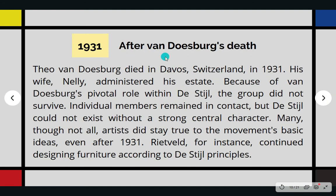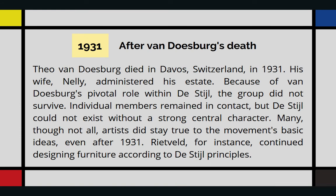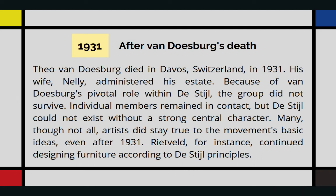In 1931, after Van Doesburg's death — he died in Davos, Switzerland — his wife Nellie administered his estate. Because of Van Doesburg's pivotal role within the De Stijl group, the group did not survive. Individual members remained in contact, but De Stijl could not exist without a strong central character. Many, though not all, artists did stay true to the movement's basic ideas even after 1931. For instance, Rietveld continued designing furniture according to De Stijl principles.